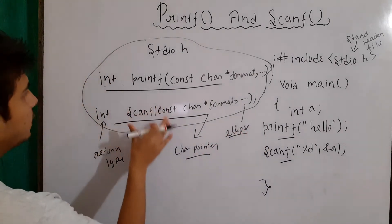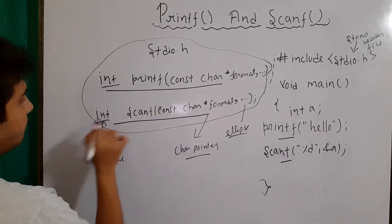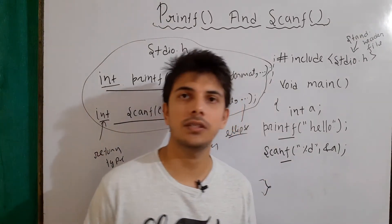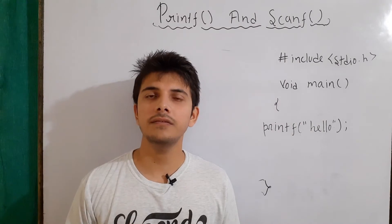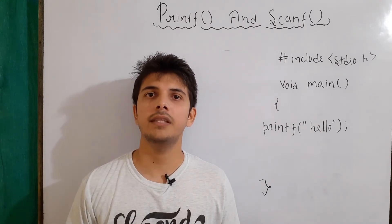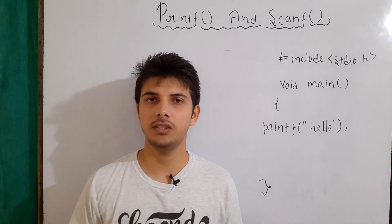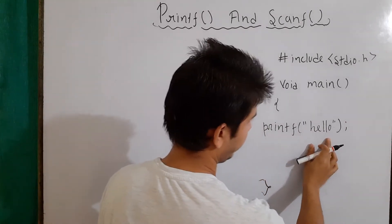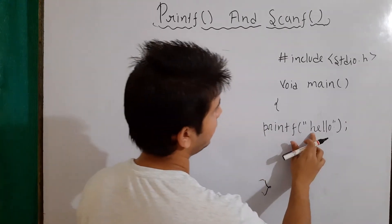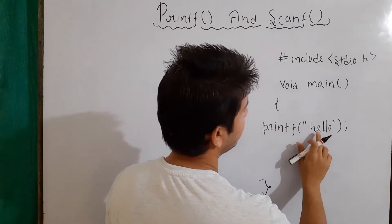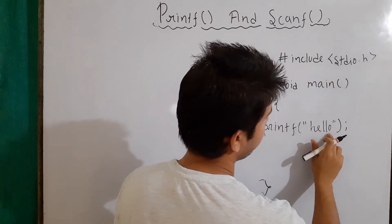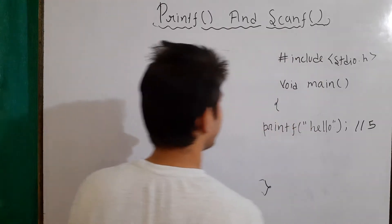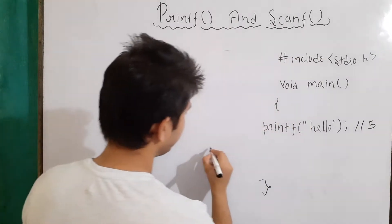Both of these functions return some integer value. Let's talk about what printf and scanf return. The printf function returns the number of characters it is printing. For example, if it is printing 'hello', which is five characters (h-e-l-l-o), it will return five after printing.